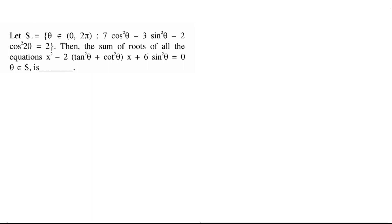Equation solve karna hai. Question ki statement di gayi hai. Let S be the set containing theta belonging to open interval (0, 2π) such that 7cos²θ - 3sin²θ - 2cos²(2θ) = 2. Then find the sum of roots of all the equations x² - 2(sin²θ + tan²θ)x + 6sin²θ = 0, where θ belongs to S.